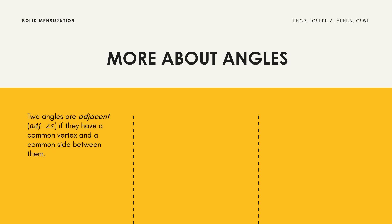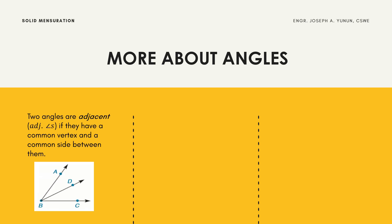Two angles are adjacent if they have a common vertex and a common side between them. As shown in the figure, angles ABD and DBC are adjacent angles.